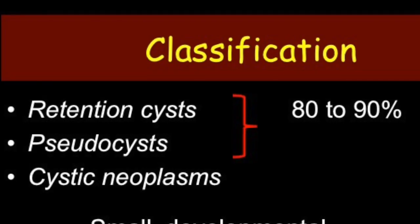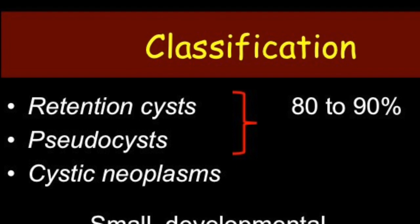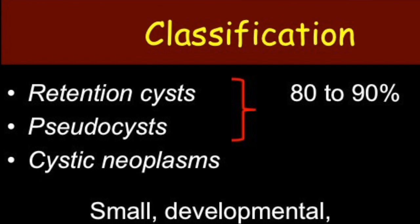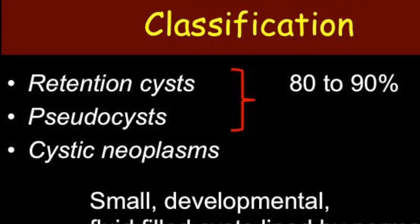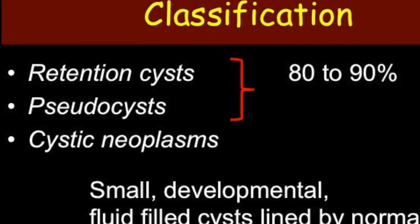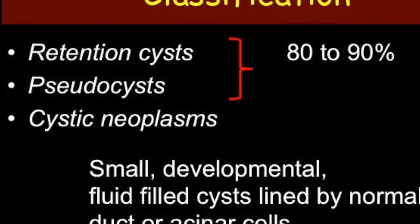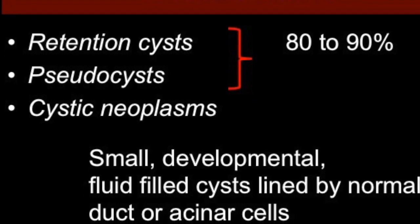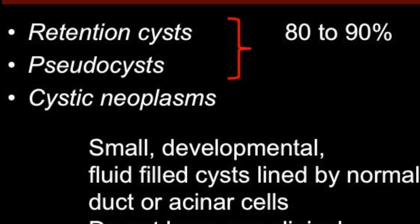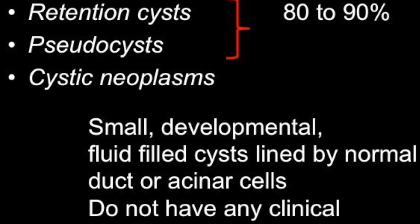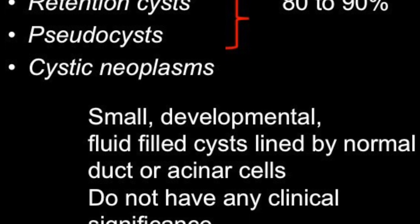These lesions can be classified as retention cysts, pseudocysts, or cystic neoplasms. Retention cysts and pseudocysts form about 80 to 90 percent of total lesions, while true neoplasms account for just about 10 to 20 percent.